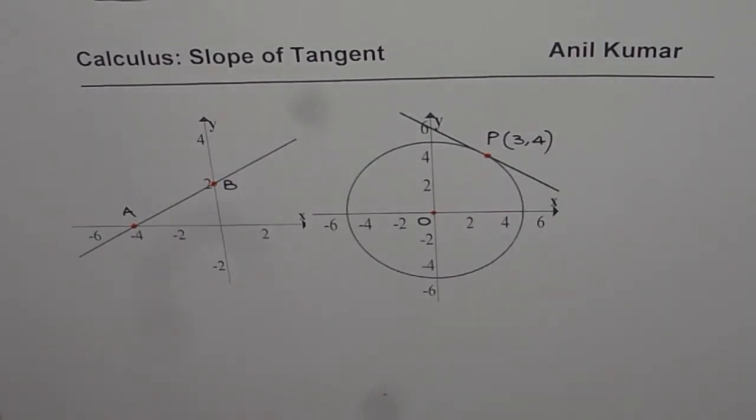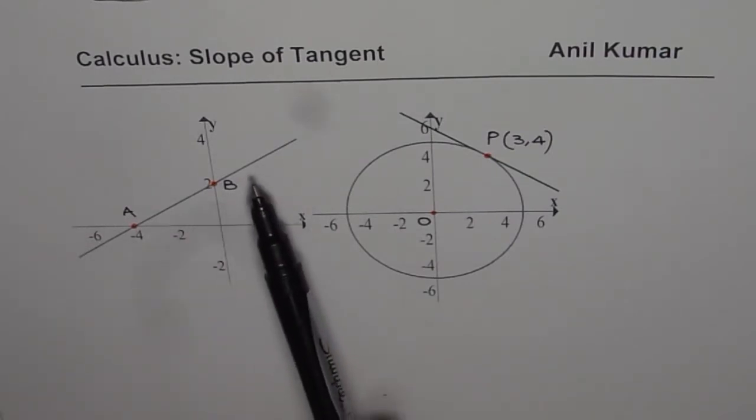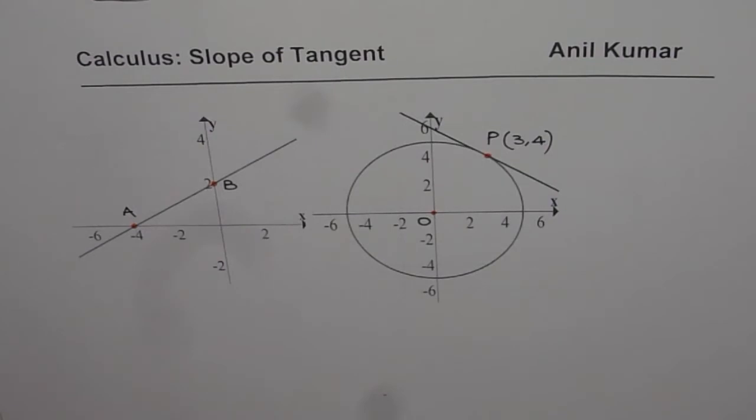So you can now pause the video and find slope for both these lines. The first line is a straight line, not a tangent, just a straight line. It's kind of a review for you. So you can pause the video, answer the question and then look into my suggestion.